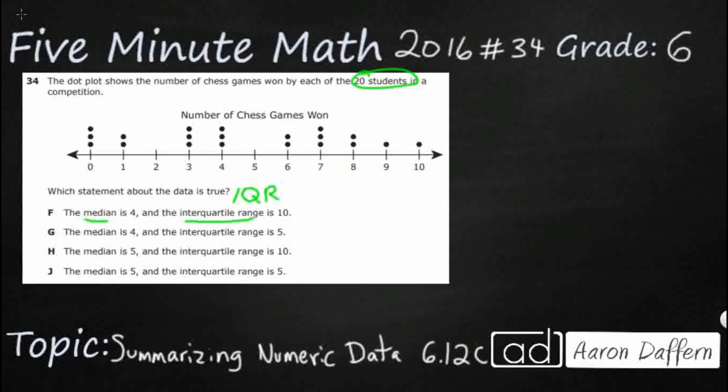In order to do that, I think the easiest way is to pull this data off the dot plot. I'm keeping it in order: I have three zeros, two ones, and three threes.